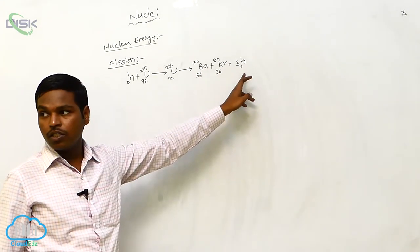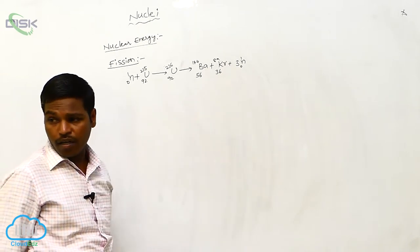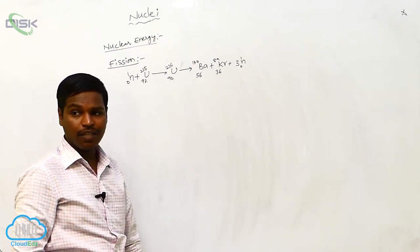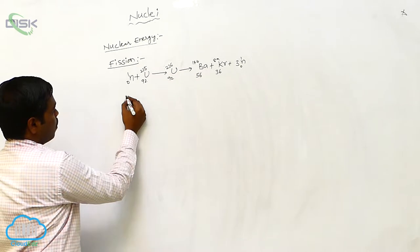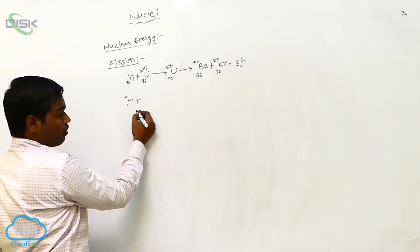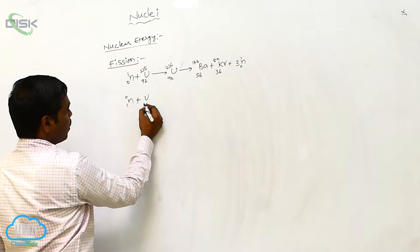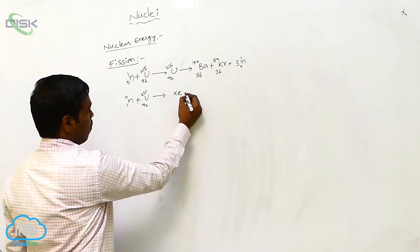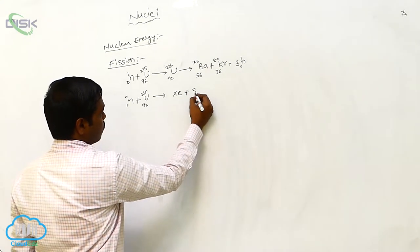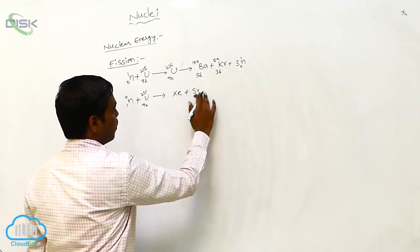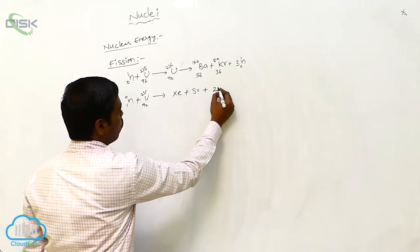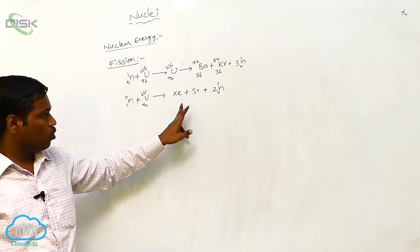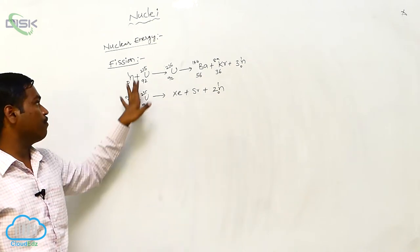One more fission reaction: a neutron bombarded on Uranium-92-235 gives Xenon and Strontium, plus two neutrons. In the fission process, two to three neutrons are released for every fission reaction on average.